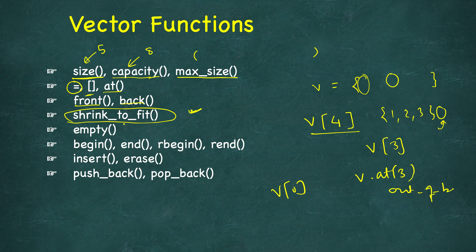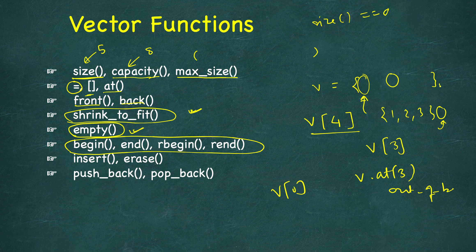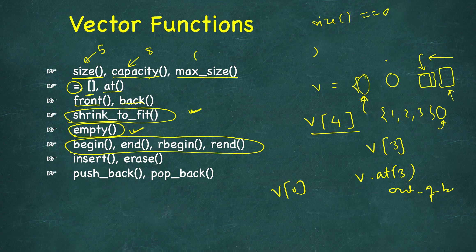shrink_to_fit() can be very handy in certain scenarios. Just like size(), pretty much all containers provide empty() — you can either check size() == 0 or directly call empty(), which returns a boolean. We also have iterator functions: begin() returns an iterator pointing to the first element, end() returns an iterator pointing to an imaginary slot after the last element, rbegin() returns a reverse iterator pointing to the last element, and rend() points to a space before the first element.